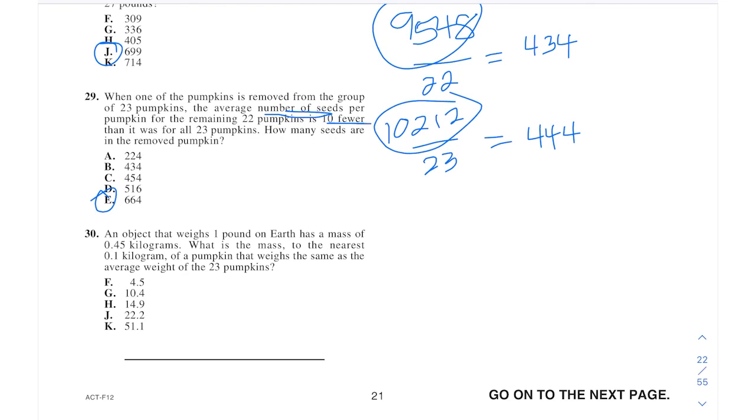I think it said the average weight was 10. So 10 pounds, X number of kilograms, 1 pound, 0.45. So that'll be 4.5.